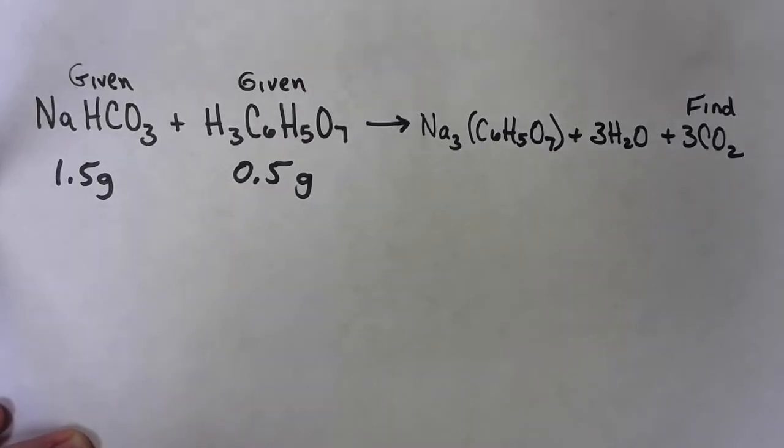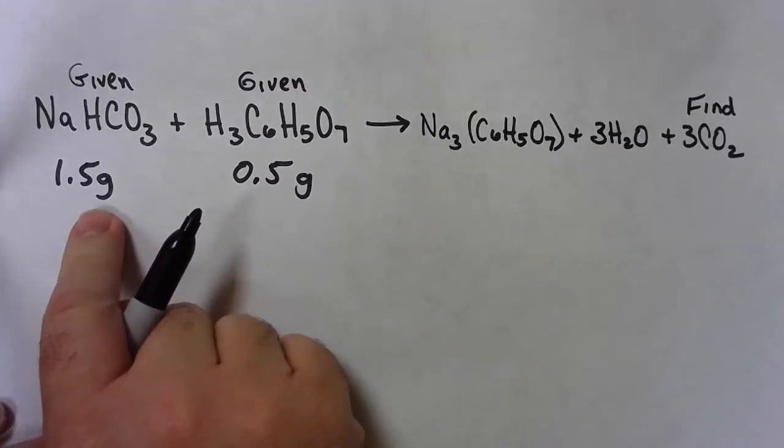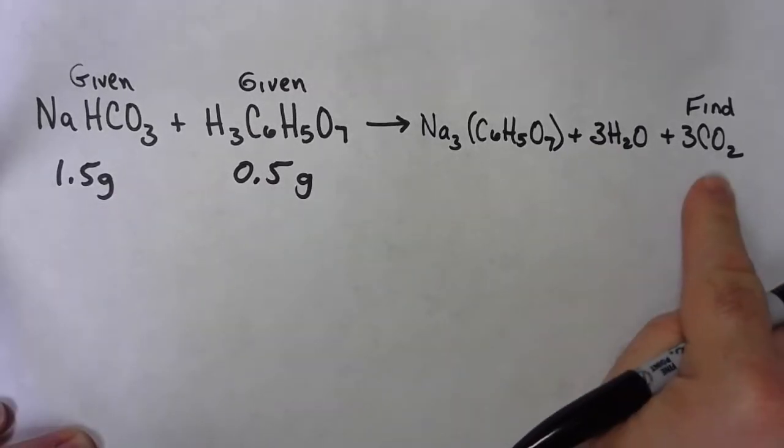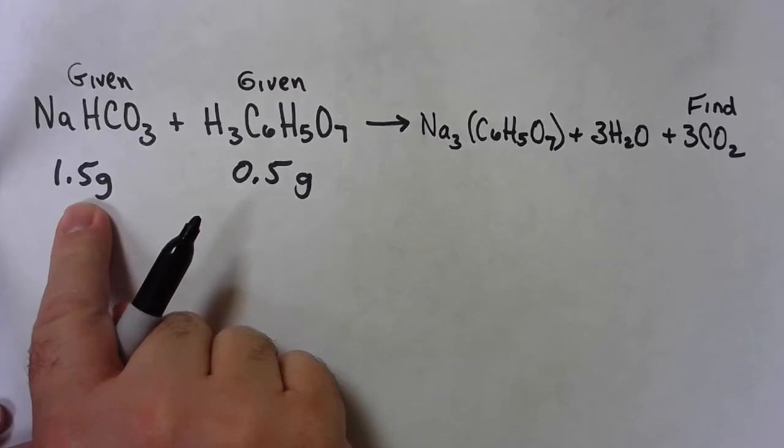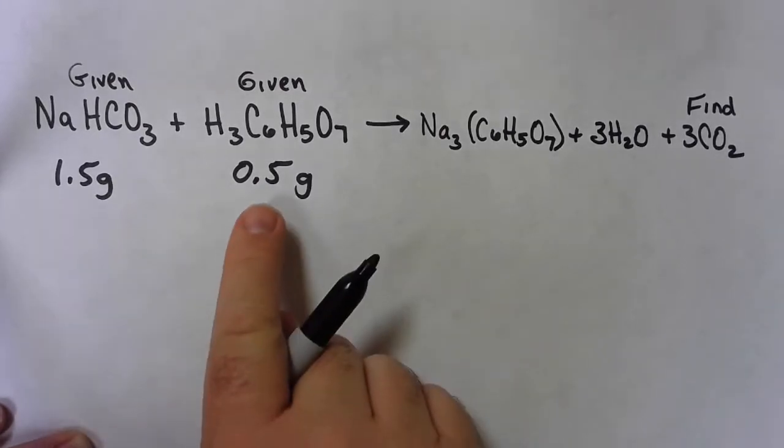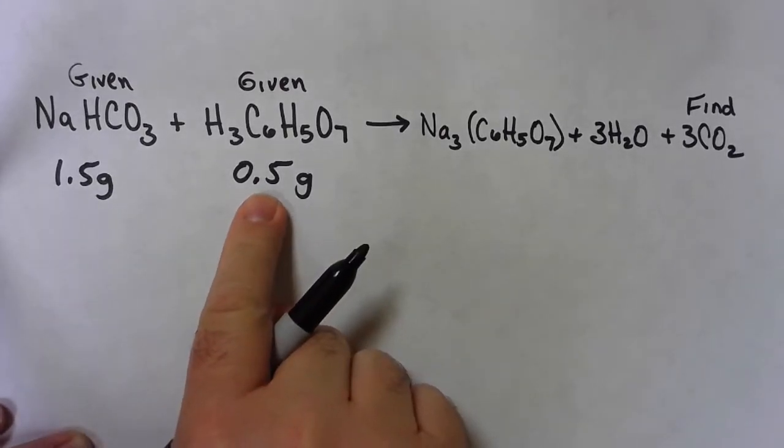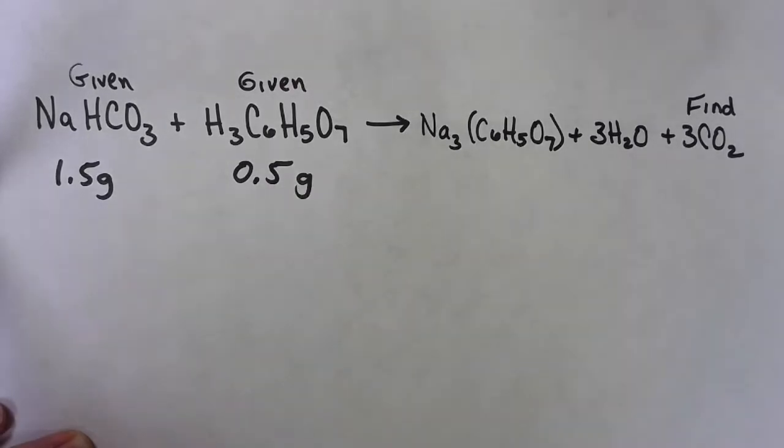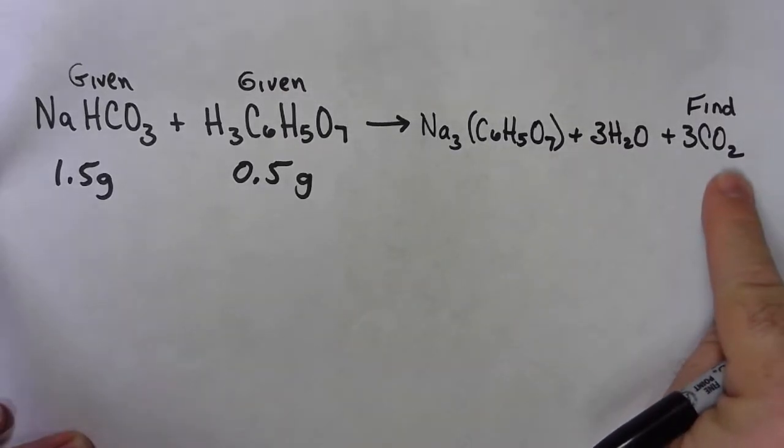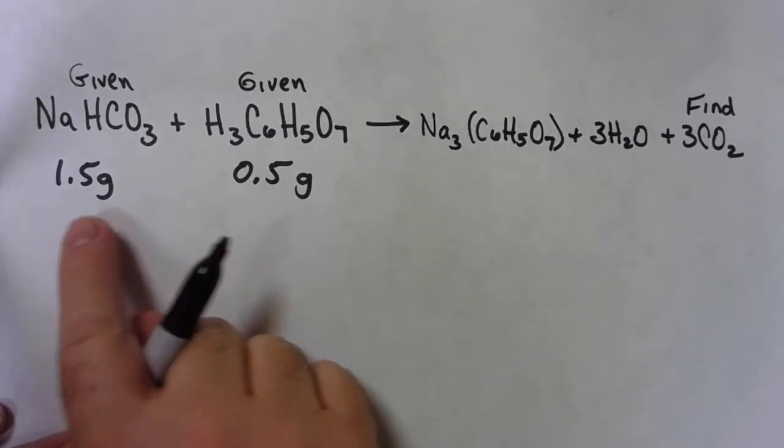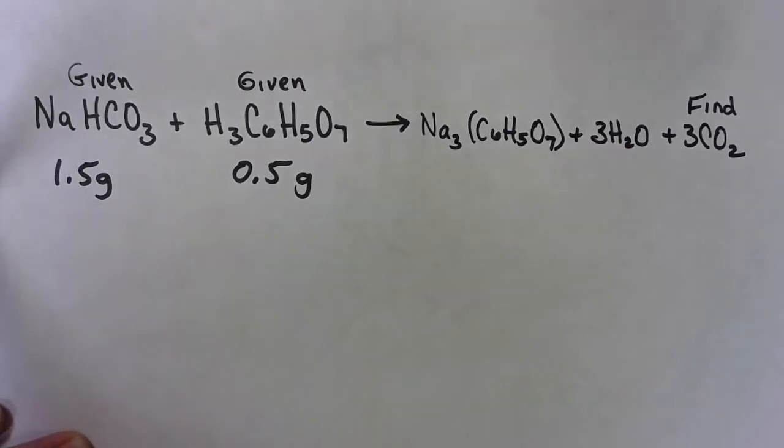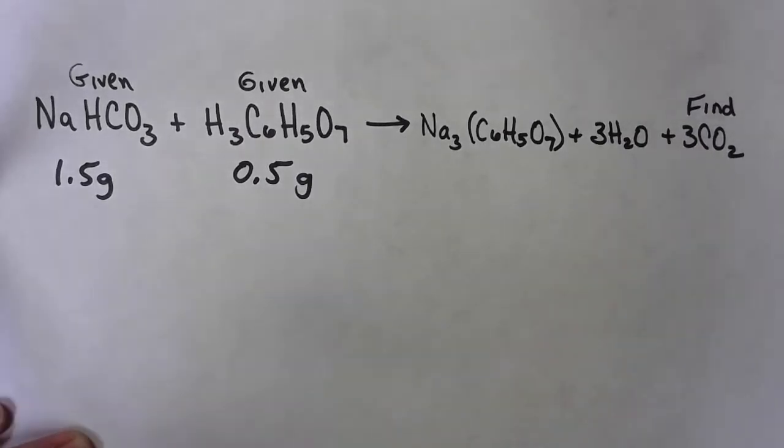That's the safest way is to do two problems. Let's figure out the mass of the carbon dioxide gas that can be made from this equation using these two amounts of chemicals. So I'm going to start with my first given. I'm going to find out how much carbon dioxide I can make if I use up all 1.5 grams of this. Then I'm going to start it again, and I'm going to use the 0.5 grams of the citric acid, find out how many grams of carbon dioxide I can make with that. Whichever one makes the least amount, well, that's the amount that we can make.